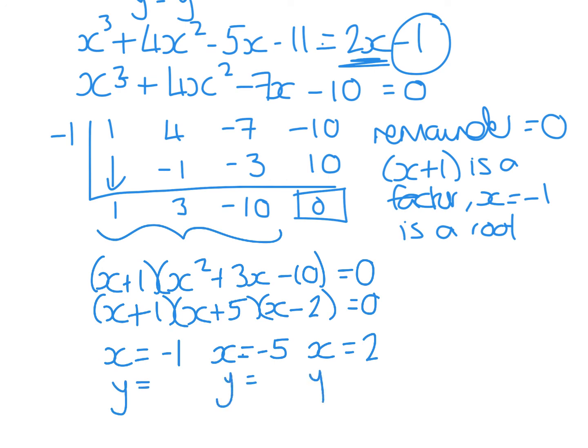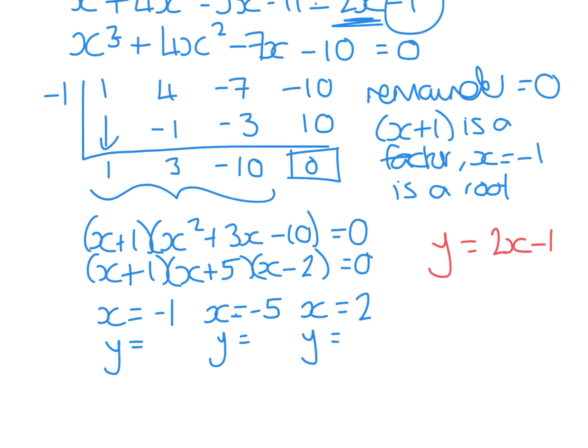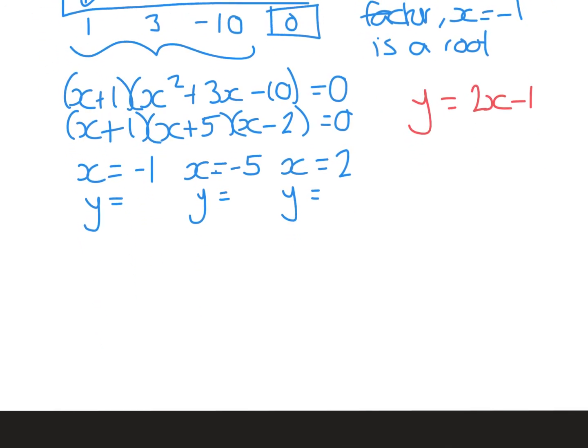And remember, we are looking for coordinates. And the easiest one to sub into, it was a straight line one. So we're going to sub into y = 2x - 1. Right, let's create some space. So, substitution bit. Let's do the -1 first. So if I'm subbing in -1, 2 × -1 is -2. Take away 1 is -3. So your first coordinate is (-1, -3). Sub in the number -5. 2 × -5 is -10. Take away another 1, gives you -11. So second coordinate, (-5, -11).